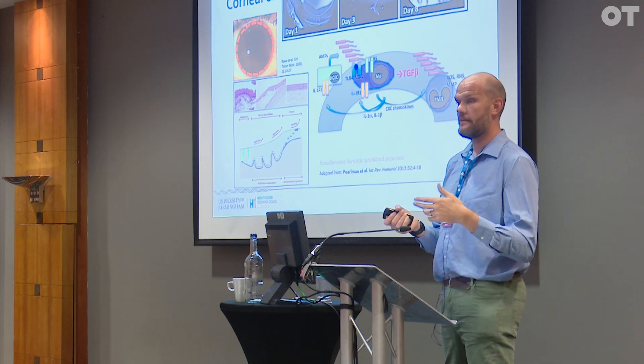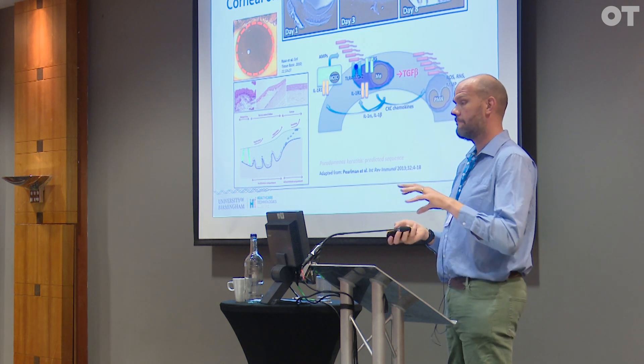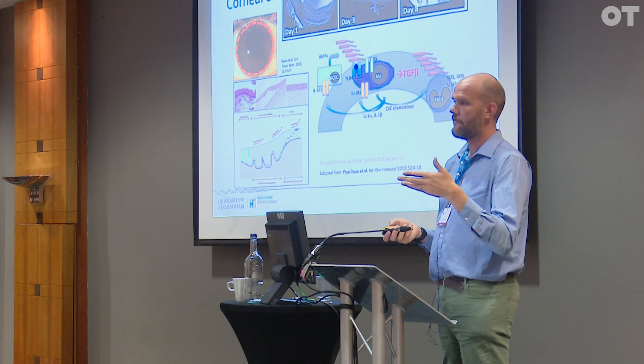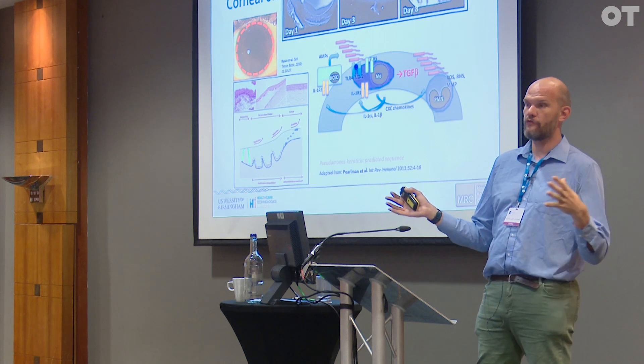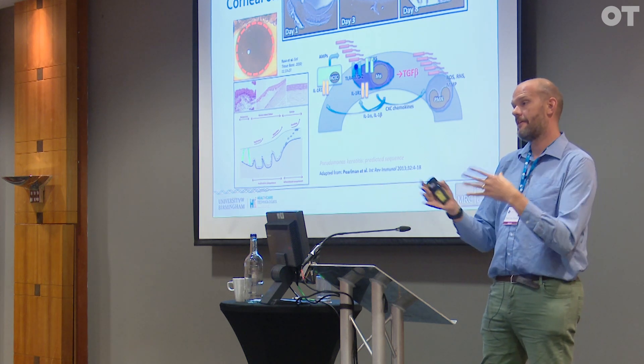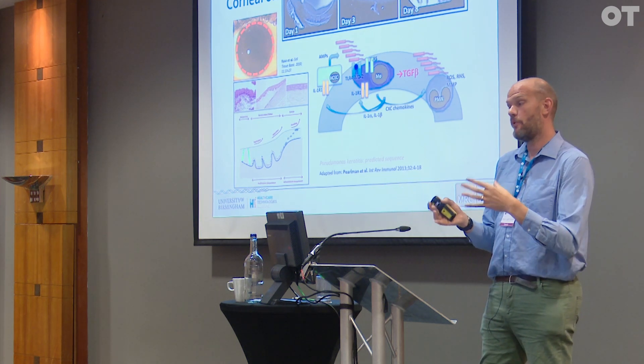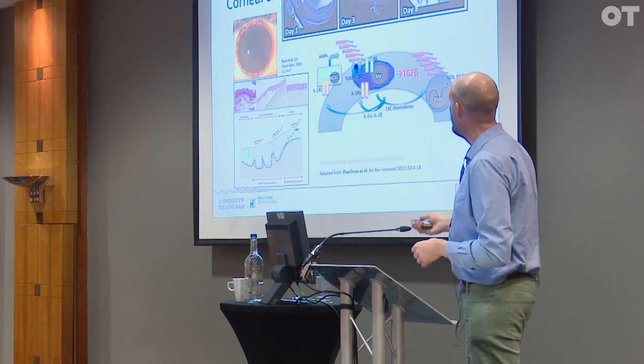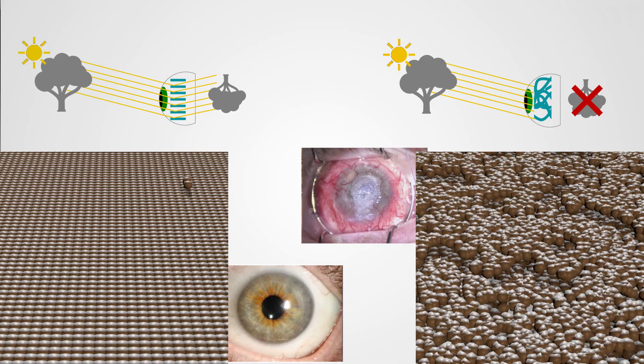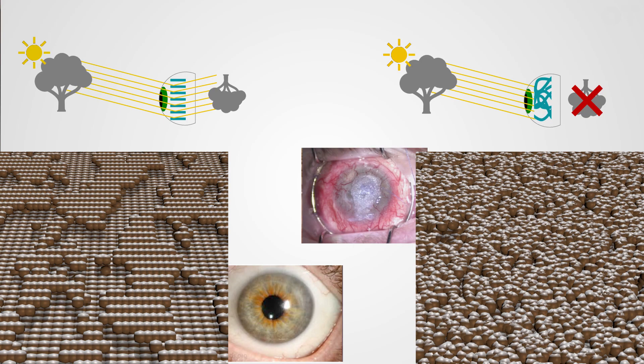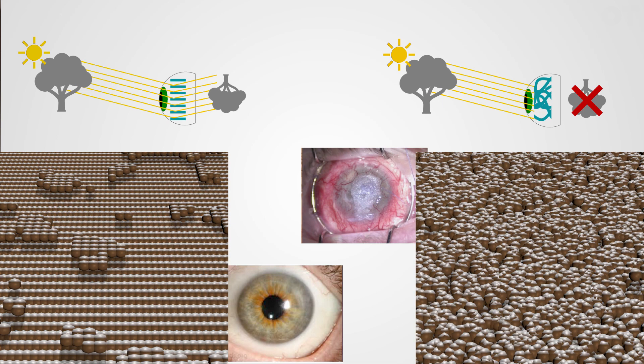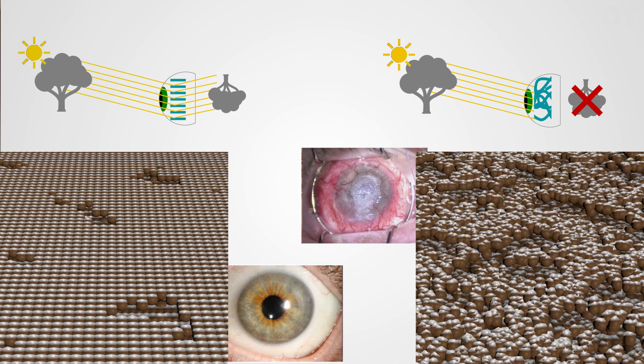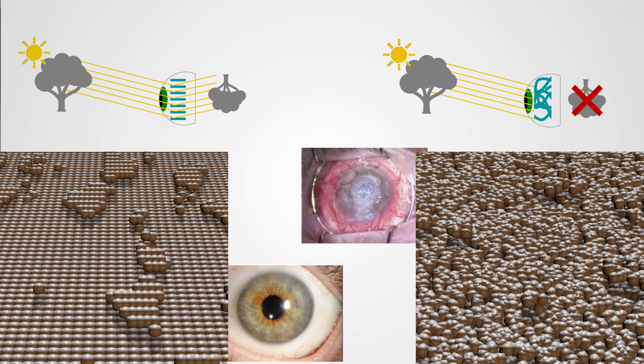Myofibroblasts have the capacity to produce collagen at a far higher rate than fibroblasts, but they also have this character that enables them to contract the wound together and allow the wound to close even more quickly. The major issue is that rapid closure means that you lose that capacity to act as a diffraction grating, which effectively results in the person having a completely clouded cornea.